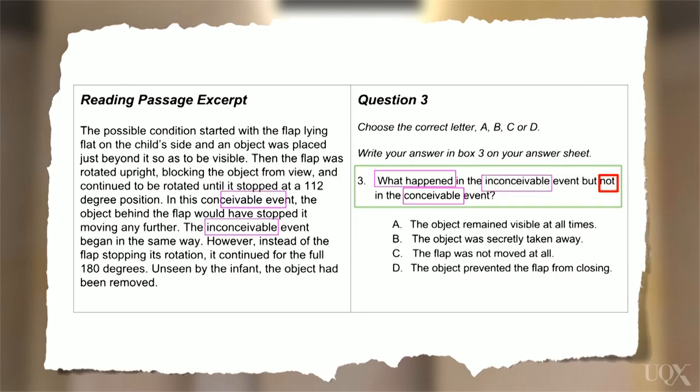Now let's read the question. It's a good idea to underline or circle key words in the question. In this question, you're being asked about an experiment. So we can see that we're being asked to find out something that happened in the inconceivable event, but it didn't happen in the conceivable event. We can use these keywords in the question to quickly find the section of the passage that we need to read carefully to find the answer.